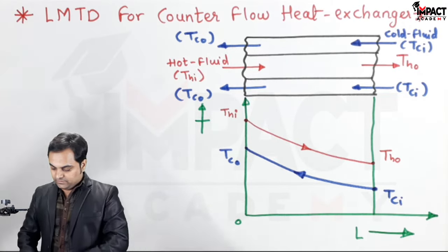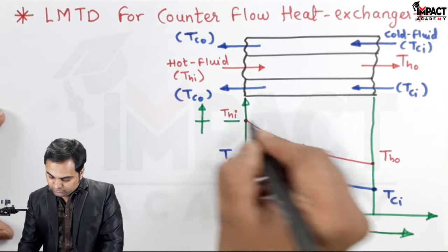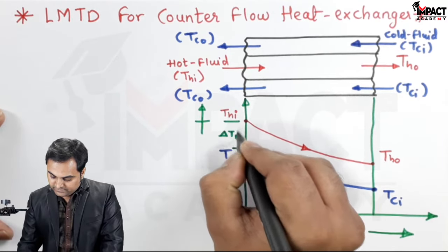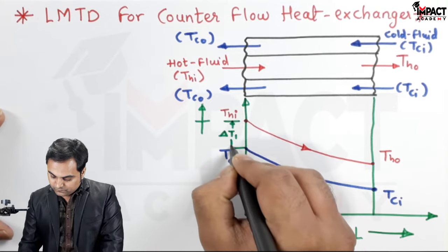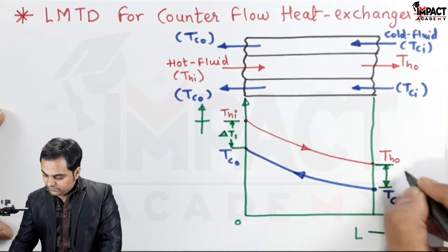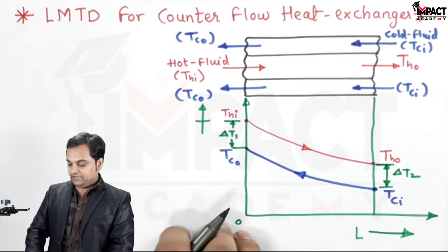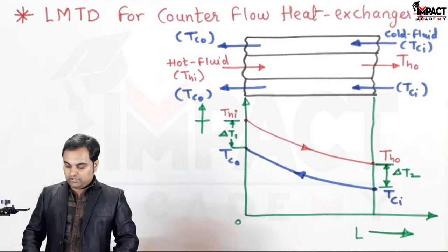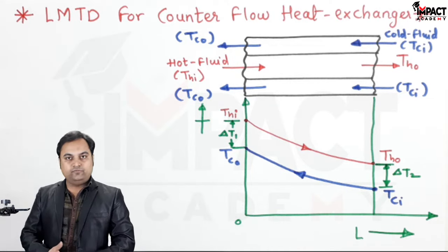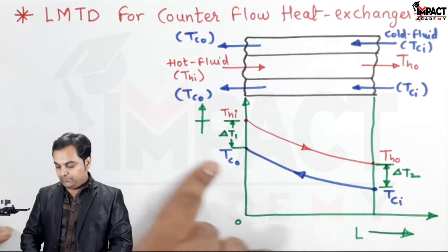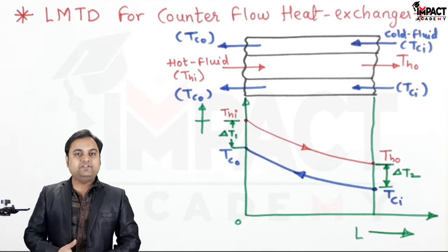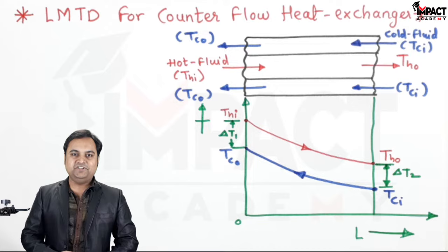The temperature difference on the left-hand side is ΔT1 and on the right-hand side it is ΔT2. Since the hot and cold fluids are moving in opposite directions, it is a counter flow heat exchanger. I'll now write the total heat transfer equation for such a condition.